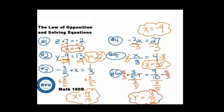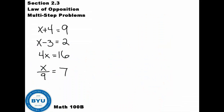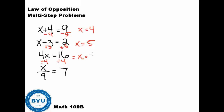Thanks for joining us for sections 2.1 and 2.2. You can continue on to the assignment. If you need additional help, contact the Tutor Center or your teacher. So to recap the law of opposition: the opposite of addition is subtraction, the opposite of subtraction is addition, the opposite of multiplication is division, and the opposite of division is multiplication. We can solve problems quickly — minus 4 to both sides gives x equals 4; add 3 to both sides gives x equals 5; divide by 4 gives x equals 4; multiply gives x equals 63. Now, the question is what if we have a problem with multiple parts?